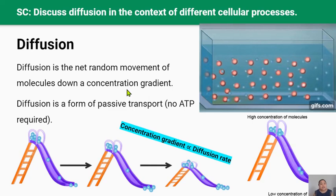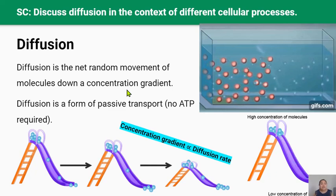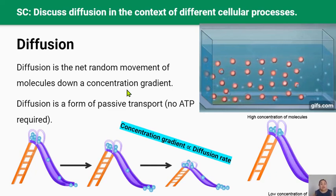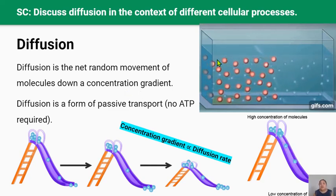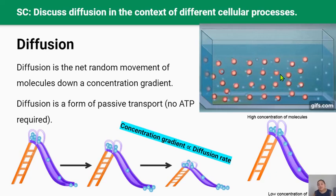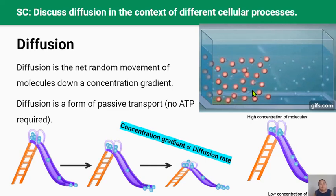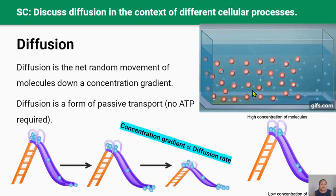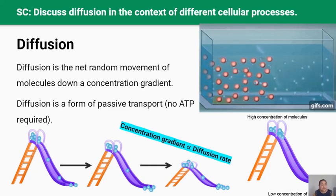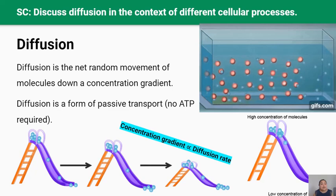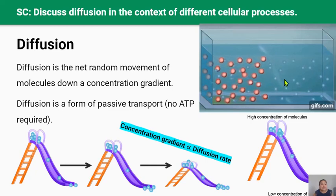So what is diffusion? Diffusion is the random movement of molecules from an area of high concentration to an area of low concentration, moving down a concentration gradient until they're equally distributed. Diffusion is a form of passive transport so it doesn't require energy in the form of ATP. The difference in concentration between the area of high concentration and the area of low concentration is called the concentration gradient.